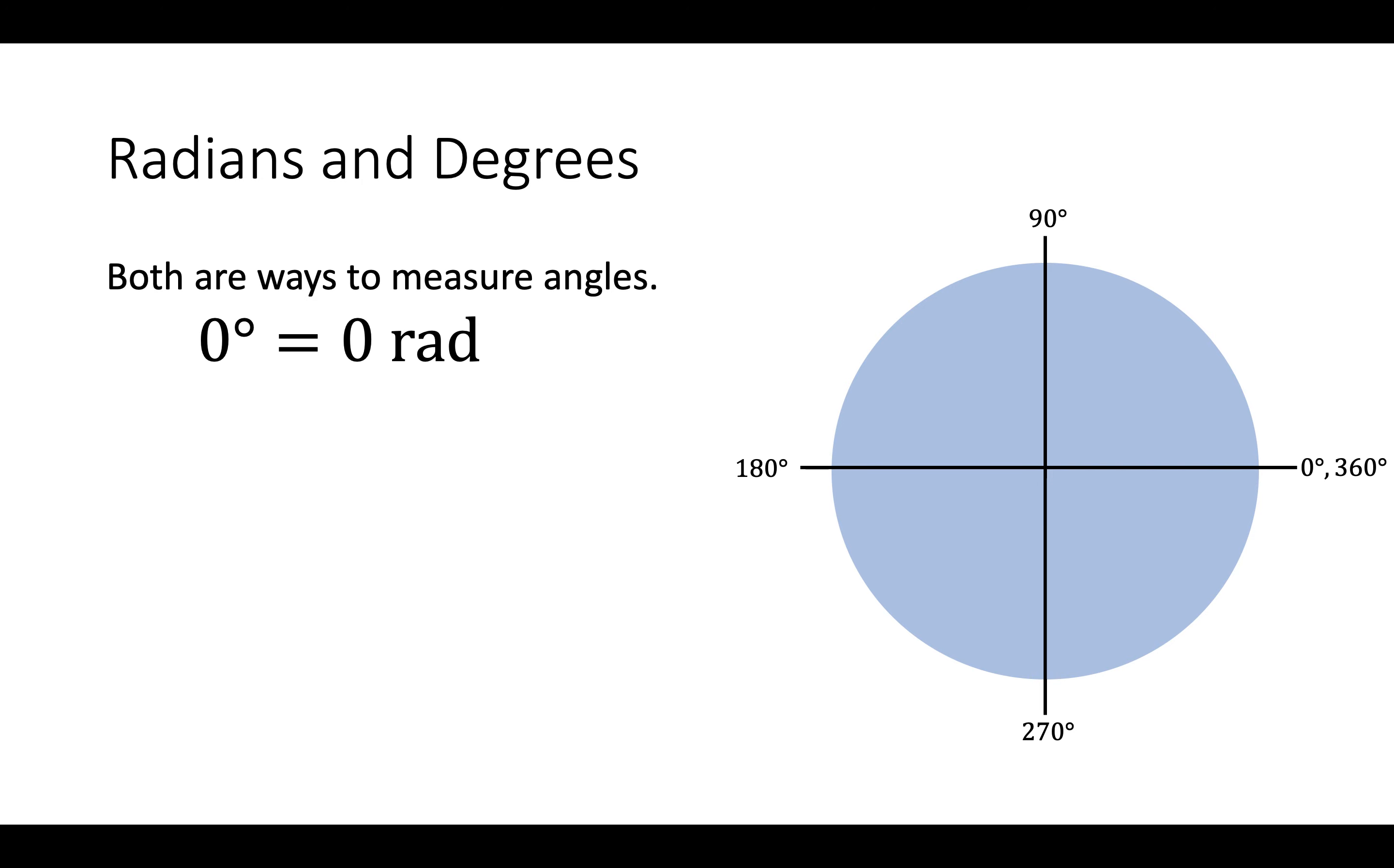Let's see some simple conversions. 0 degrees is 0 radians. That one's nice and easy.